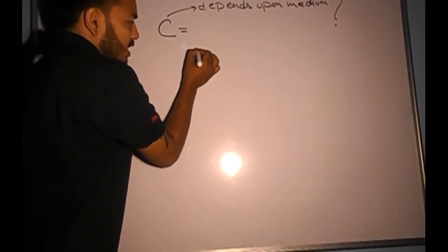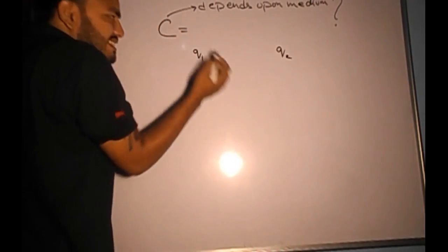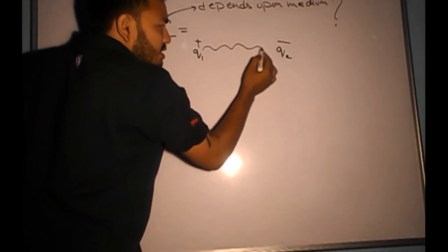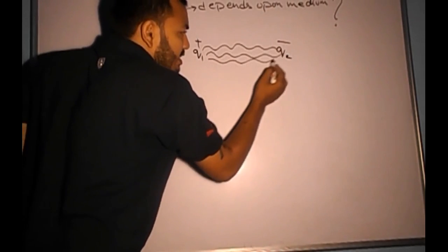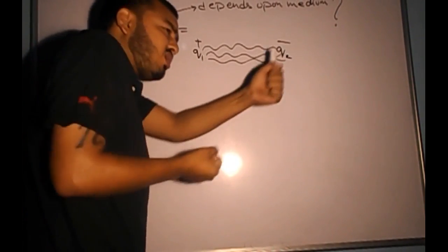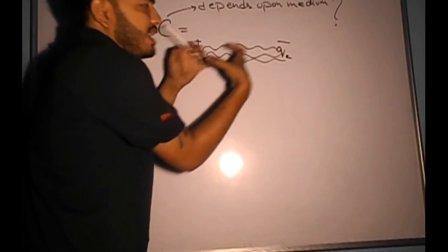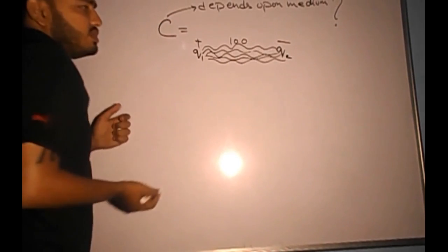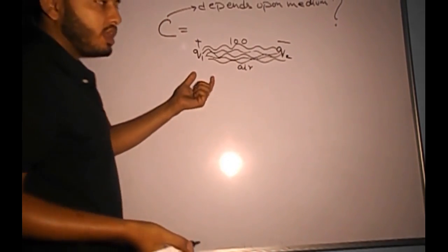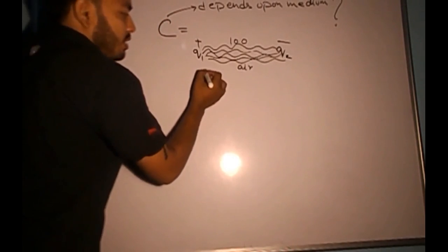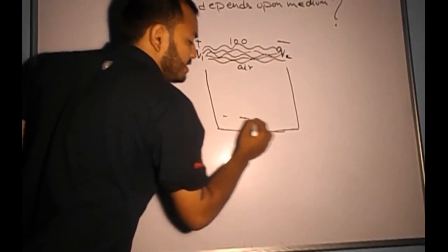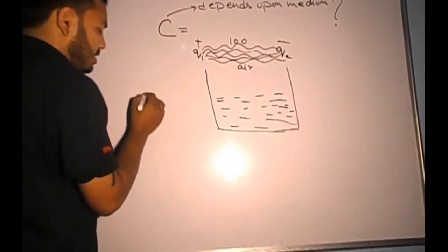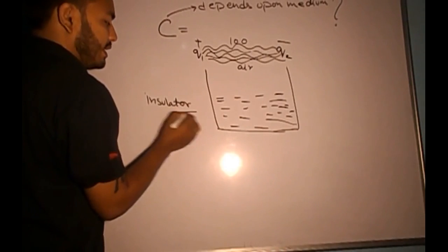Suppose we have two charges Q1 and Q2 of opposite sign, so they must be attracting each other. We can imagine there are thin strings between them being used by the force of attraction. Suppose these strings are being used in air — in air, there are 100 such strings. Now think about what will happen if we dip these two charges inside some liquid, dielectric, or insulator.